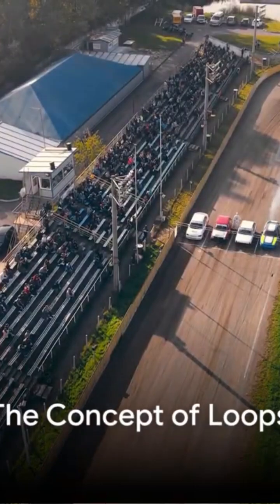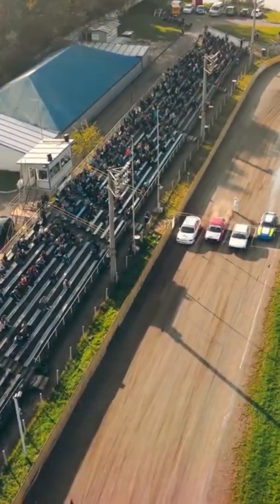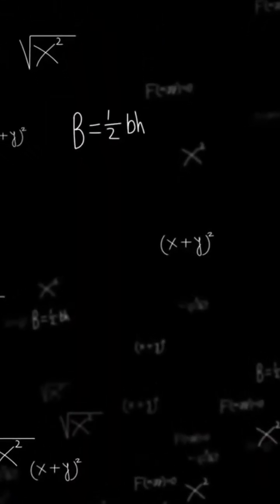Picture a race track. Cars go round and round, each lap identical to the last. This perpetual cycle is an example of a loop.